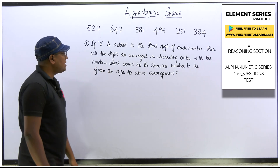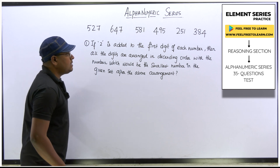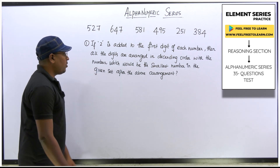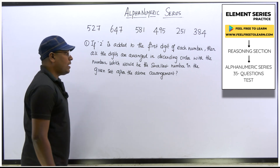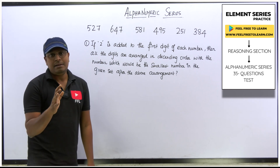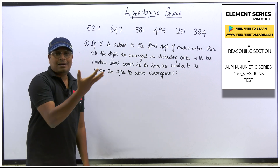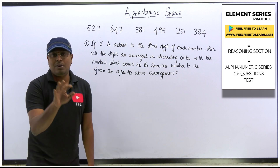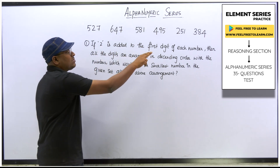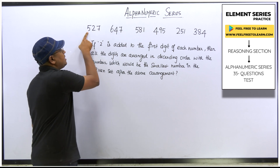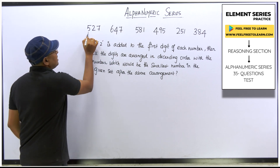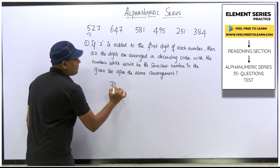Here is the first question. If 2 is added to the first digit of each number, and then all the digits are arranged in descending order within the numbers, which would be the smallest number in the given set after the above arrangements? Every question in alpha numerical series will be simple, but you have to be careful while changing numbers to ascending or descending order. So here, 527 — the first digit is 5, add 2 to get 727.